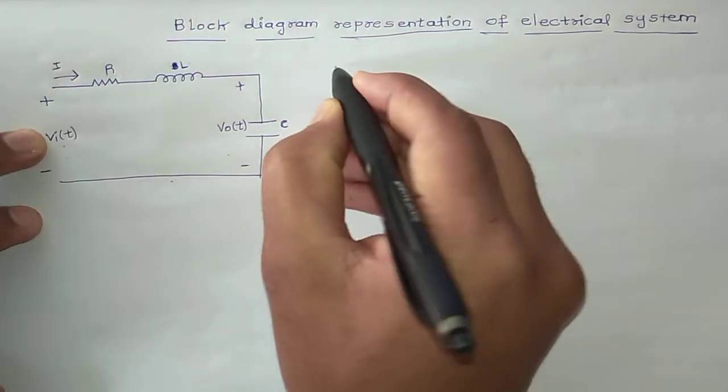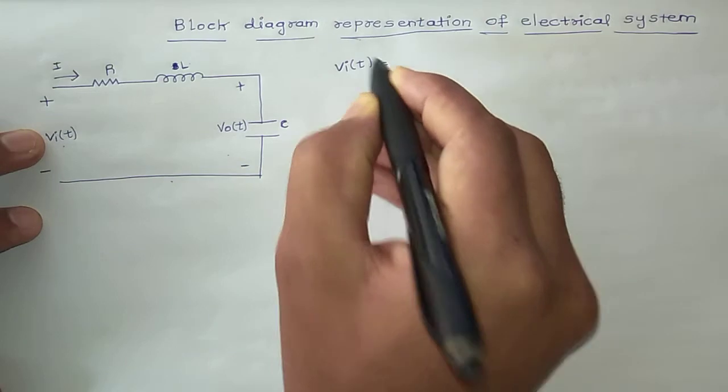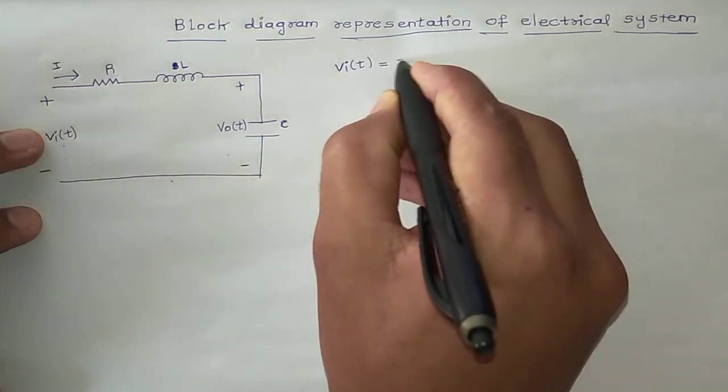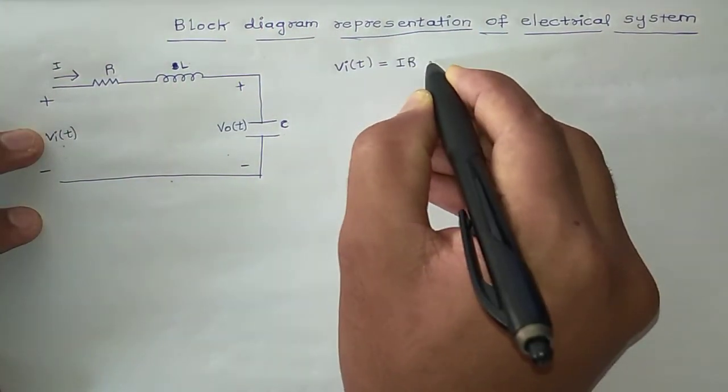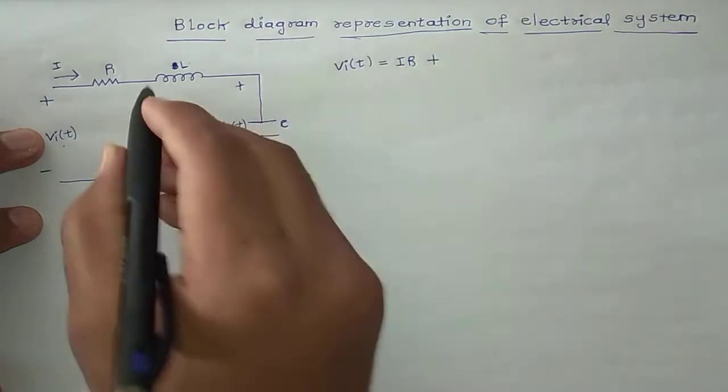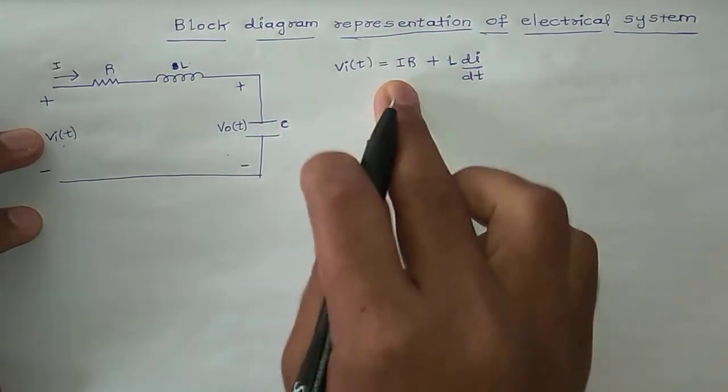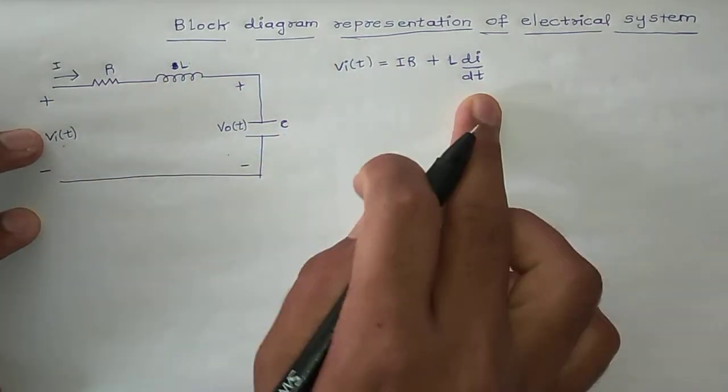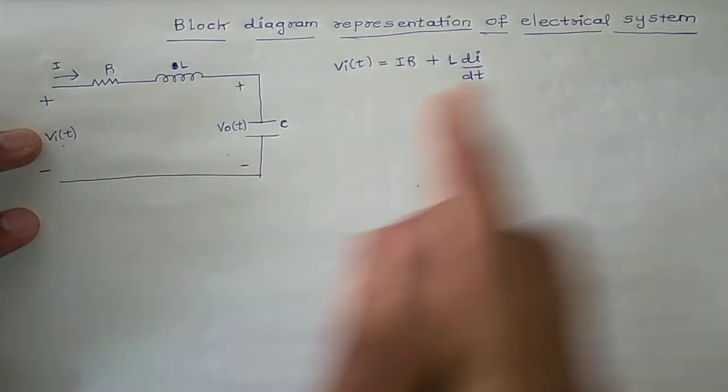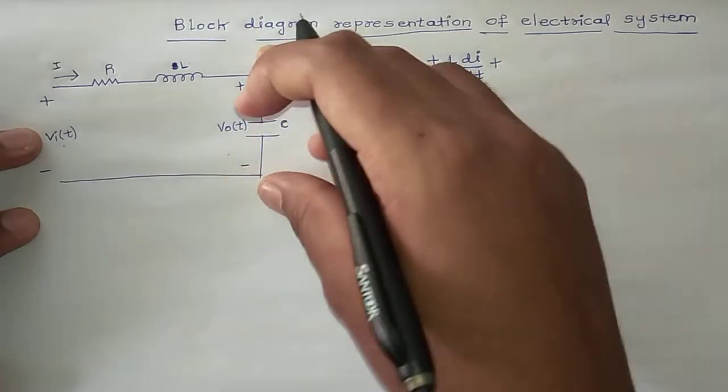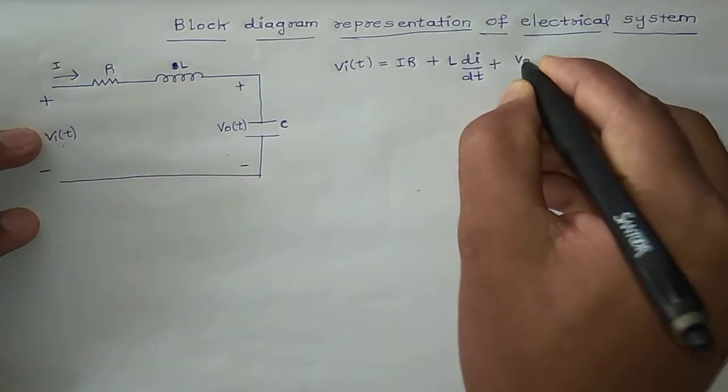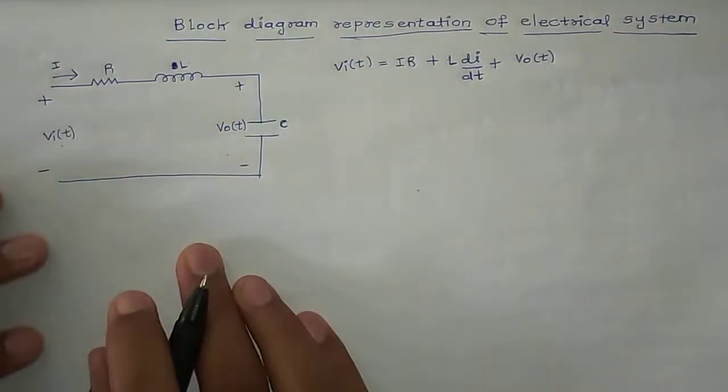So my input is Vi(t). My input is spread across R that equals iR, plus L into di/dt. This is voltage across the resistor and this is voltage across the inductor, plus voltage across the capacitor. That means Vout(t). So Vout(t).